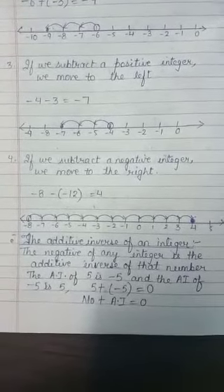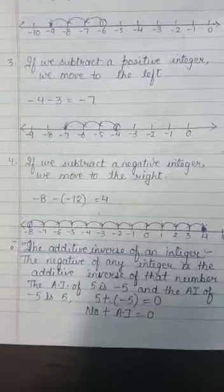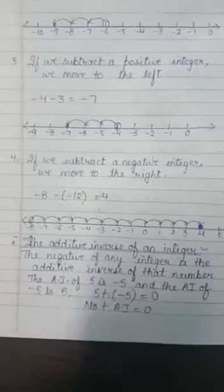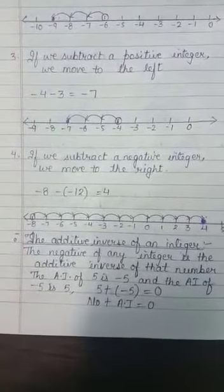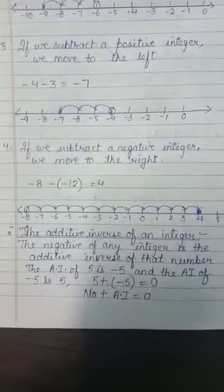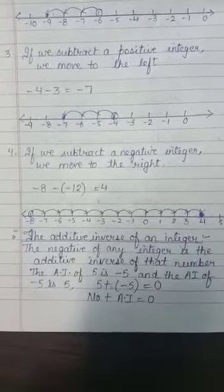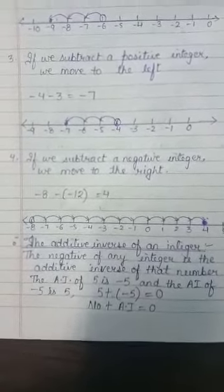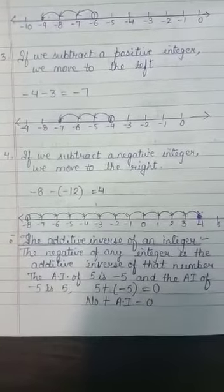The next topic is additive inverse. The negative of any integer is the additive inverse of that number. The additive inverse of 5 is minus 5, and the additive inverse of minus 5 is 5. When we add a number and its additive inverse, the result is always 0. For example: 5 plus minus 5 equals 0, minus 4 plus 4 equals 0, minus 3 plus 3 equals 0, minus 20 plus 20 equals 0.